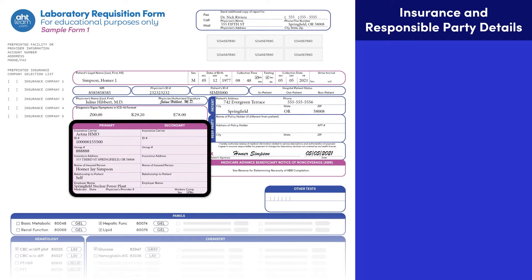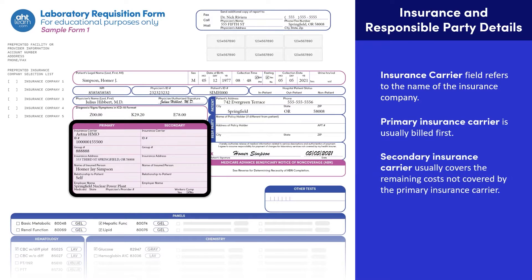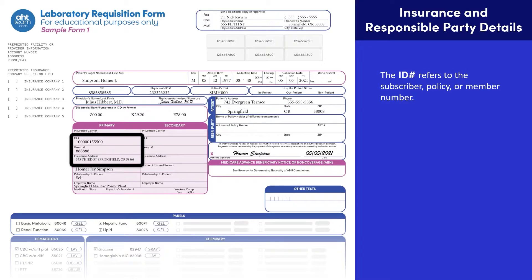The insurance carrier field refers to the name of the health insurance company. Insurance companies are also called insurers or carriers. In cases where the patient has insurance coverage from more than one carrier, it is important to identify the carrier to bill first. In most cases, the primary carrier is billed first, leaving the secondary carrier to cover the remaining costs.